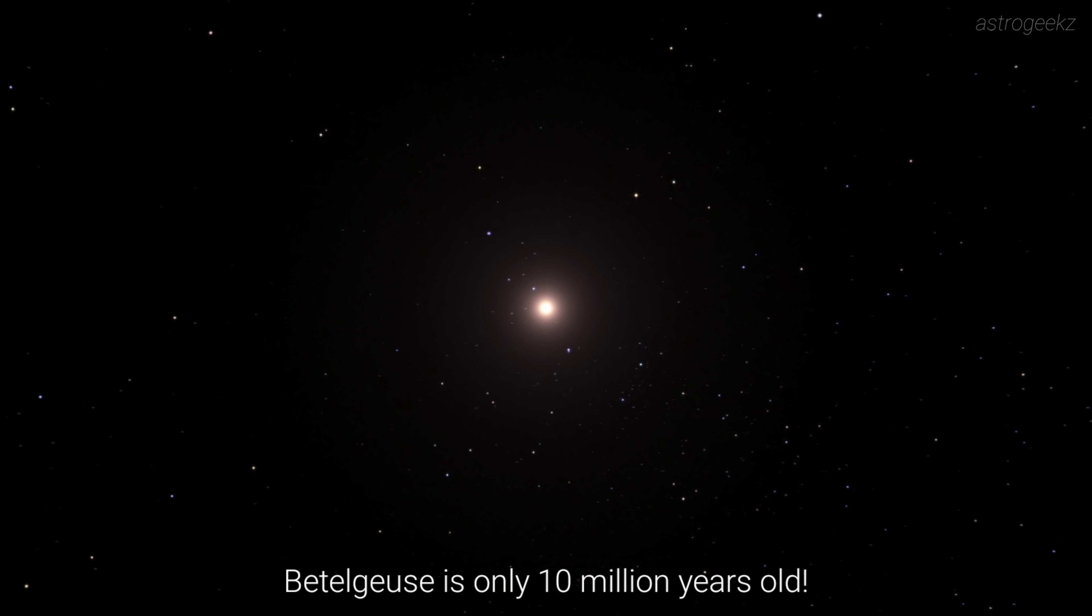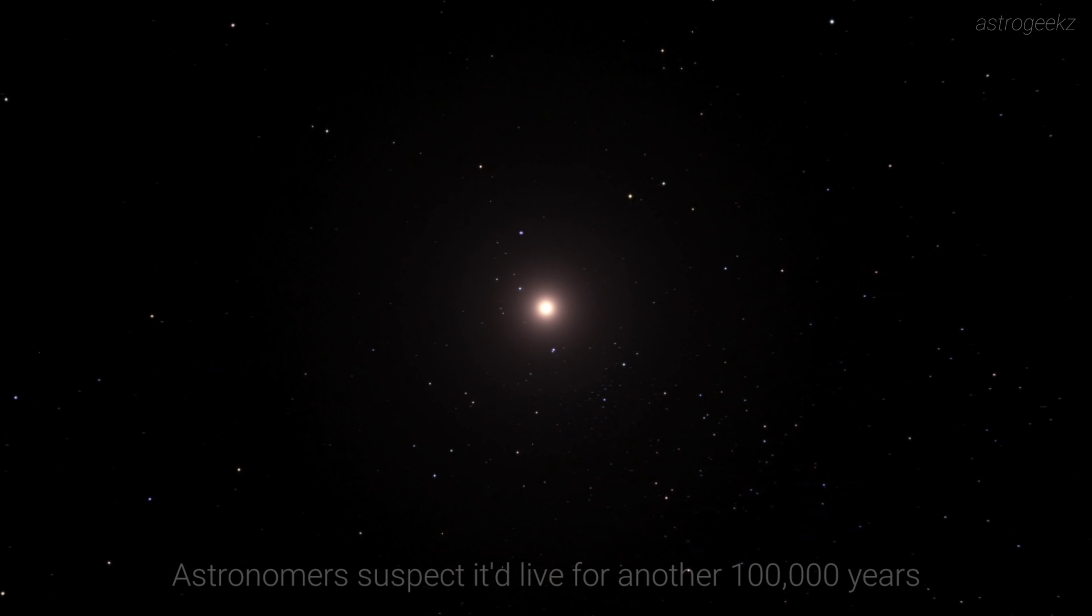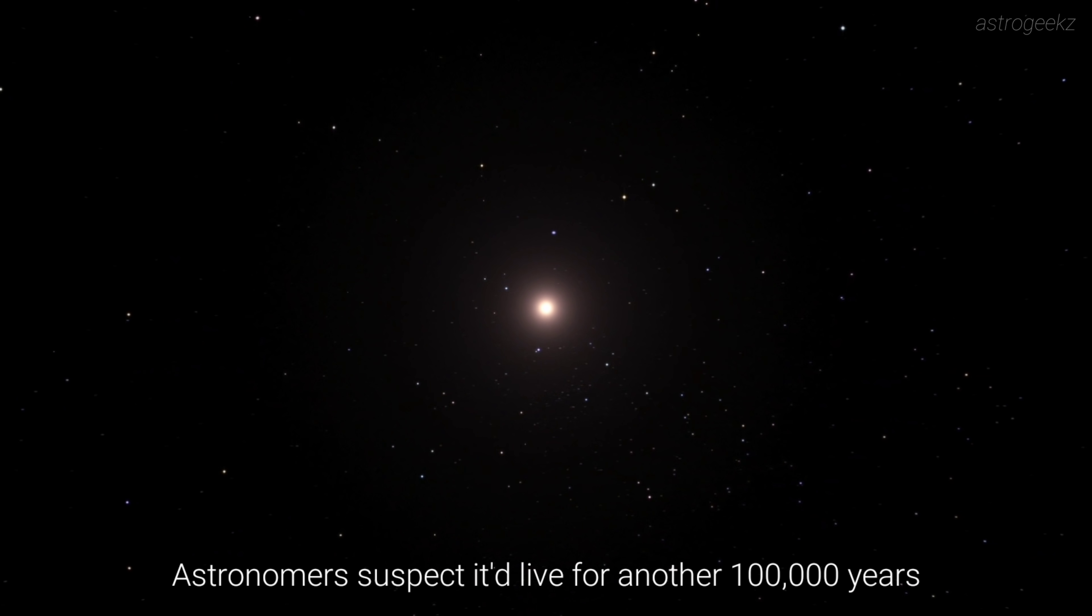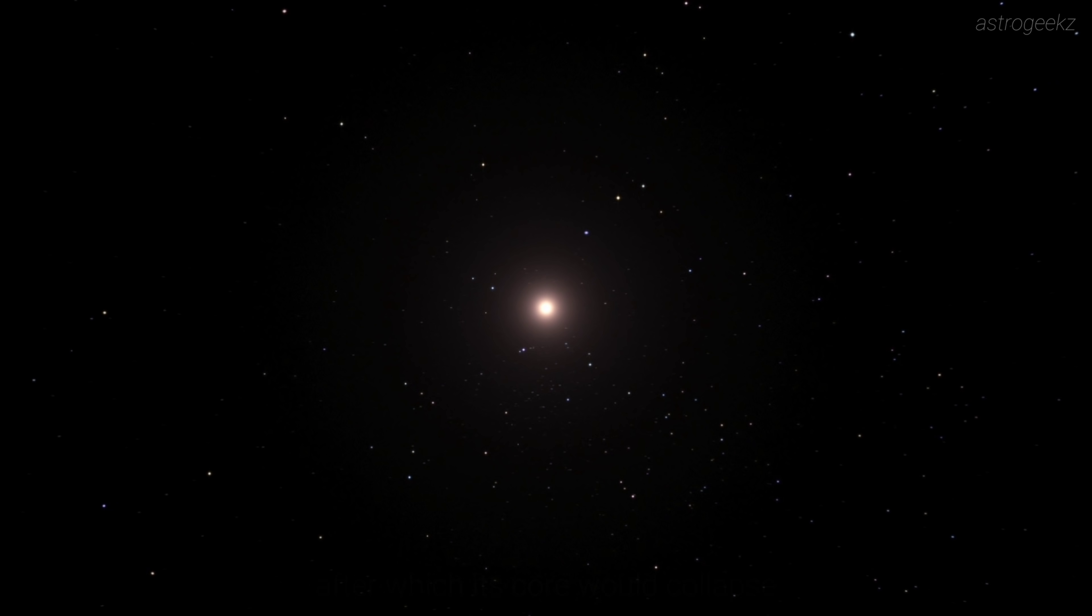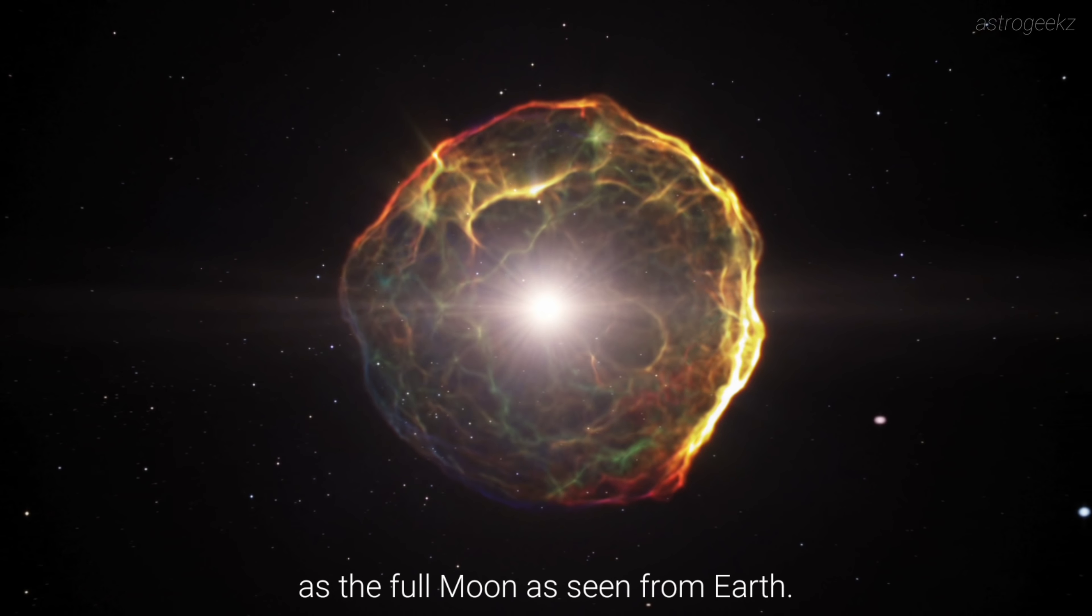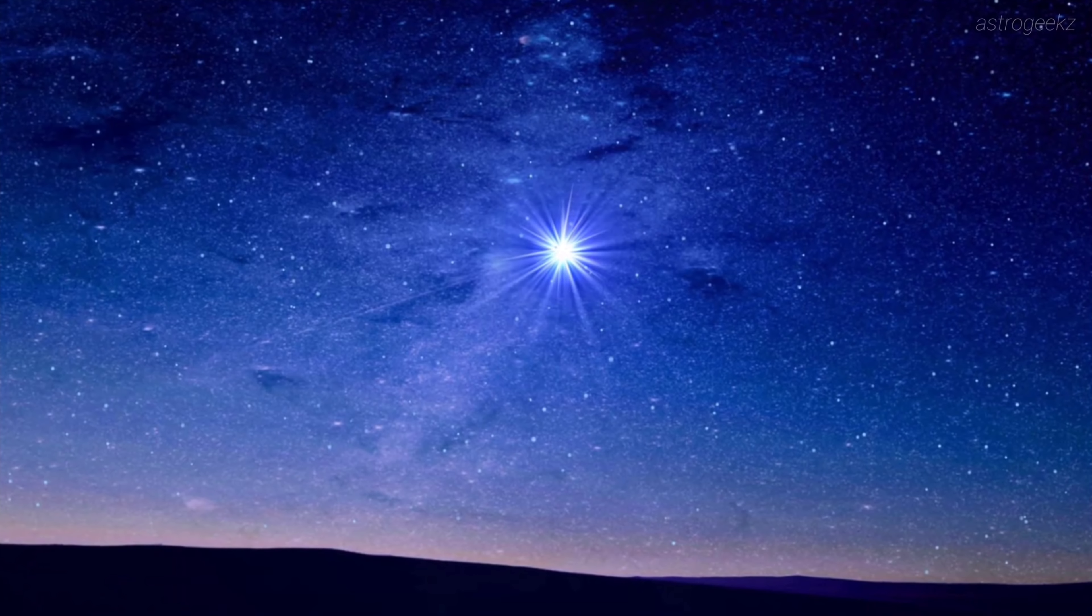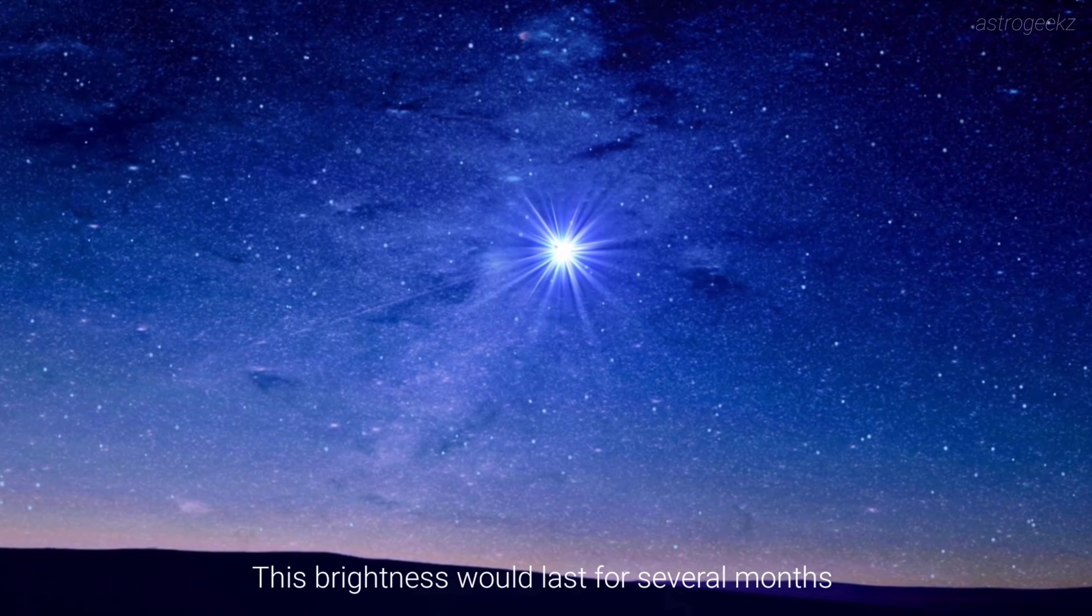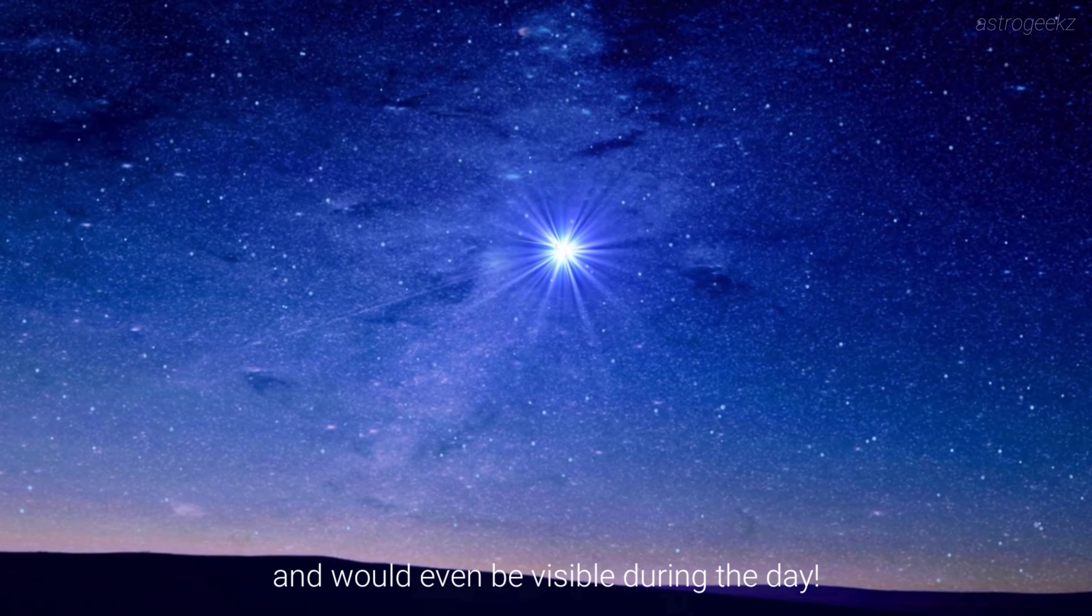Betelgeuse is only 10 million years old. Astronomers suspect it would live for another 100,000 years, after which its core would collapse into a super dense neutron star. This supernova explosion might appear as bright as the full moon as seen from Earth. This brightness would last for several months and would even be visible during the day.